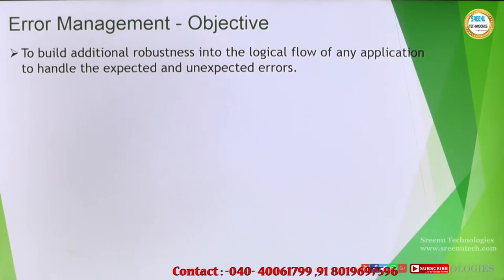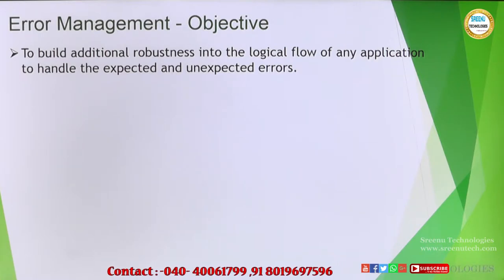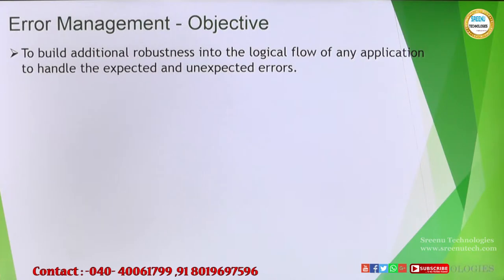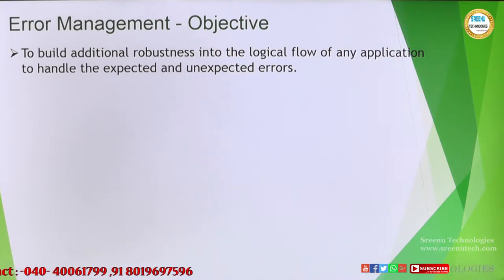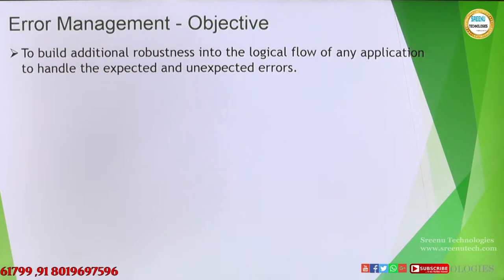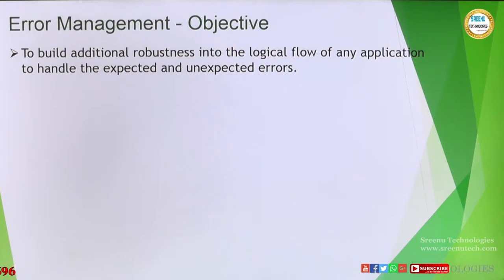The objective is to build additional robustness into the logical flow of any application to handle expected and unexpected errors. There are two things: expected errors and unexpected errors. Expected means things we can guess beforehand — for example, the application we're trying to access is not available or not responding at some time. We know this might happen. Expected errors are ones where we know there is a chance the application might not work or the browser did not open.